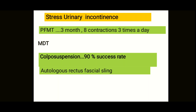The multidisciplinary team should be involved in stress urinary incontinence management. The first surgical option to consider is Burch colposuspension (pubovaginal suspension), which has around a 90% success rate. While there are complications to consider as it is an operation, it is currently considered the safest surgical option. Autologous rectus fascia sling can also be considered.